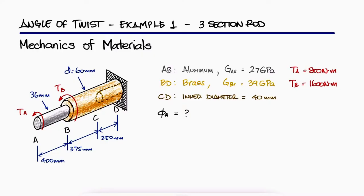We can find the angle of twist at A if we find the angle of twist of A with respect to D, which is the wall. This is the same as the angle of twist of A with respect to B plus B with respect to C plus C with respect to D.